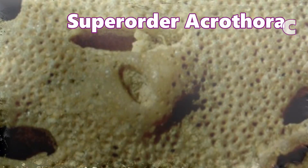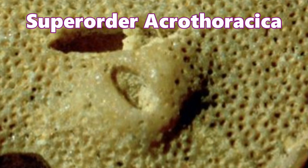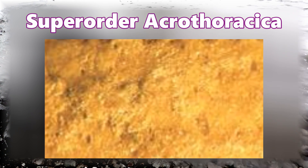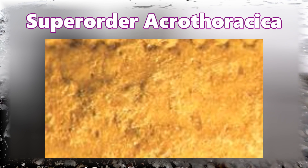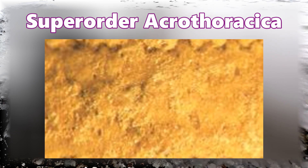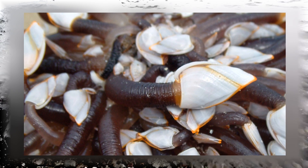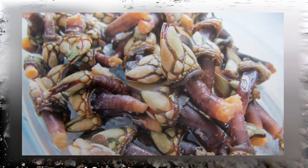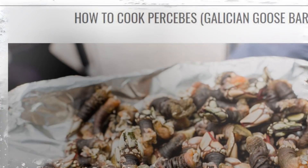The fourth type is the superorder Acrothoracica. This type also lacks a shell and sticks to carbonate rocks, developing its shell using the rock. Some barnacles, such as Japanese goose barnacles, are considered edible by humans and are mostly famous in Spain and Portugal.